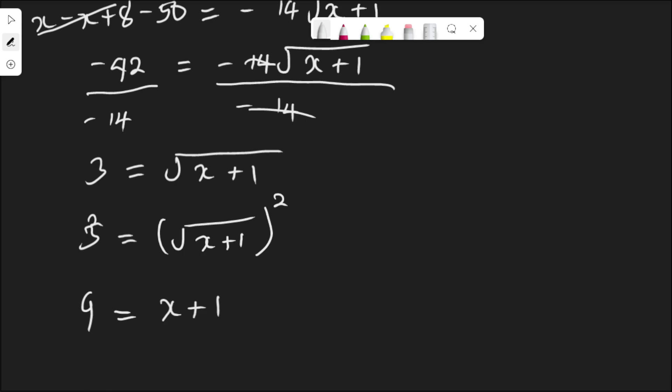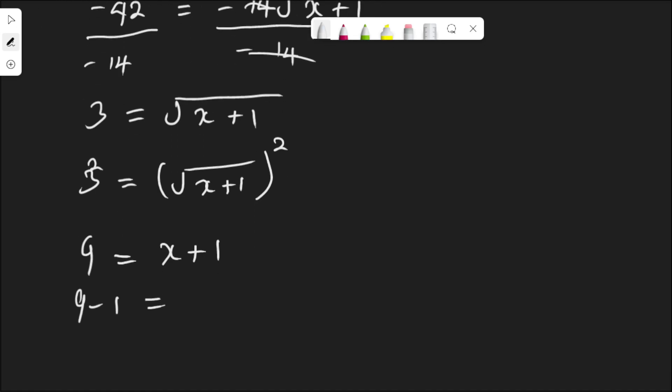Collecting like terms again, this plus 1 comes over here, becomes minus. I have 9 minus 1 is 8. Therefore, x is equal to 8. So the solution to this equation is x equal to 8.